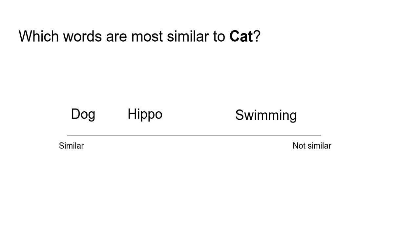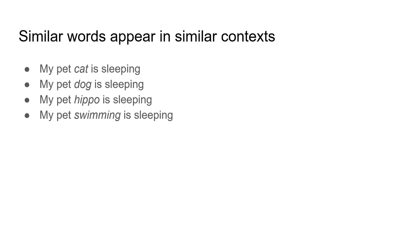This is a very human way of thinking about how words are related, but what if I told you that an AI algorithm doesn't actually care that a dog has four legs or fur the same way a cat does? Most of modern-day AI is built on the concept of similar things appearing in similar contexts. In the context we use the word 'cat,' the word 'dog' is likely to appear as well — 'my pet cat is sleeping' and 'my pet dog is sleeping.' We don't say 'my pet hippo' and we definitely don't say 'my pet swimming.'